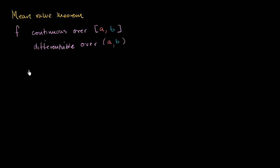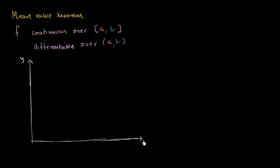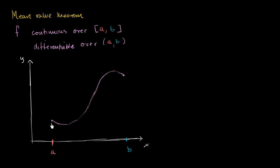So let's just try to visualize this thing. This is my function — that's the y-axis and this is the x-axis. Let me draw my interval: that's a, and then this is b right over here. And so let's say our function looks something like that. This point right over here, the x-value is a and the y-value is f of a.